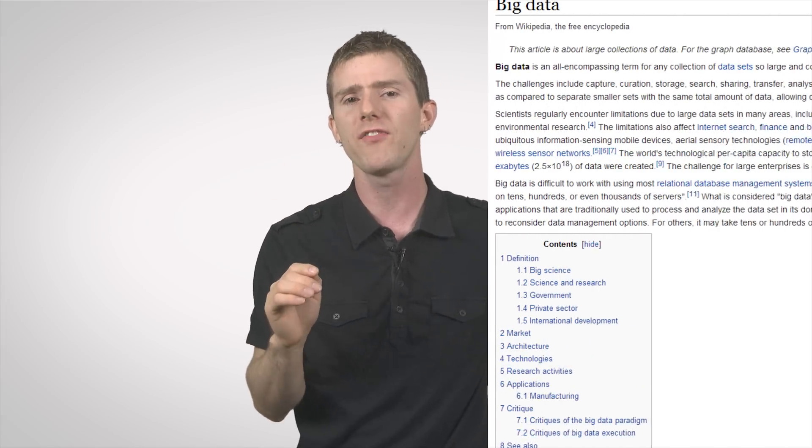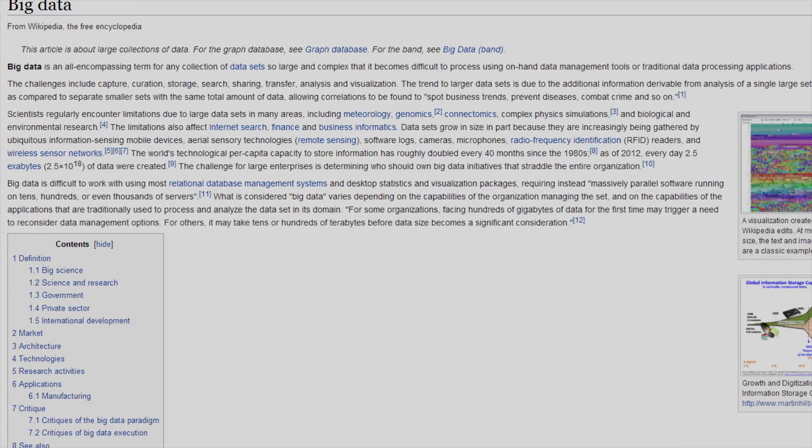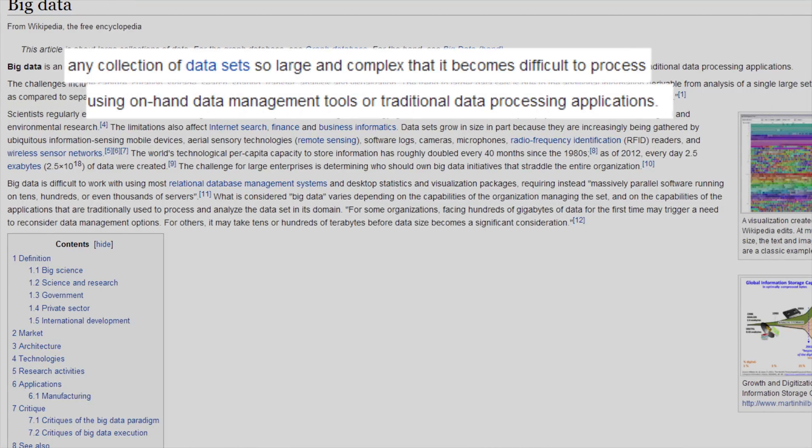But there are at least a few things that everyone can agree on. Wikipedia defines big data as any collection of data sets so large and complex that it becomes difficult to process using on-hand database management tools or traditional data processing applications. I mean, that doesn't sound so threatening, right?